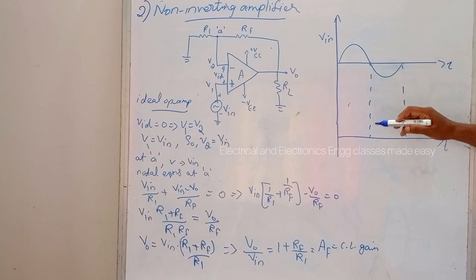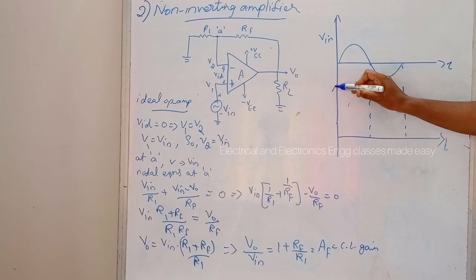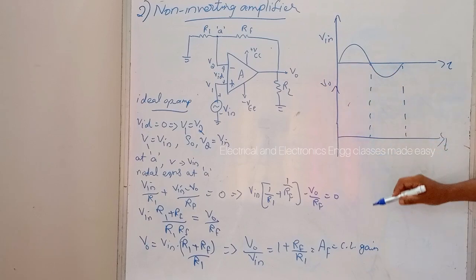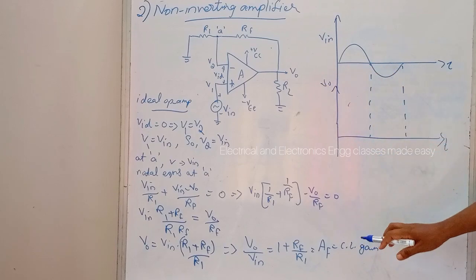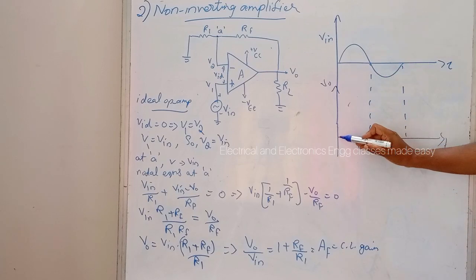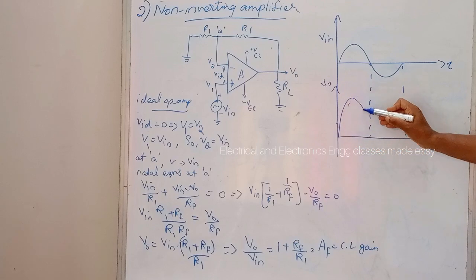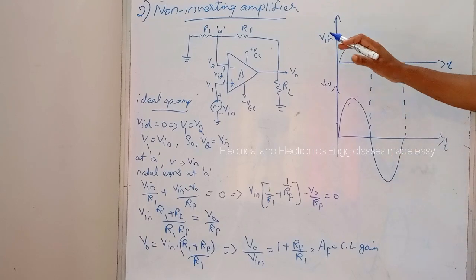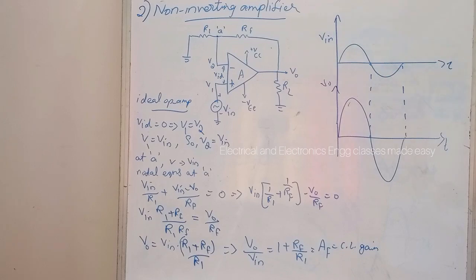Now let us draw the input and output waveforms. Let Vin be the input waveform. Then V0 equals AF times Vin, which is in phase with the input waveform. The output waveform is in phase and amplified by a factor AF. This is the input and output waveform for the non-inverting amplifier.